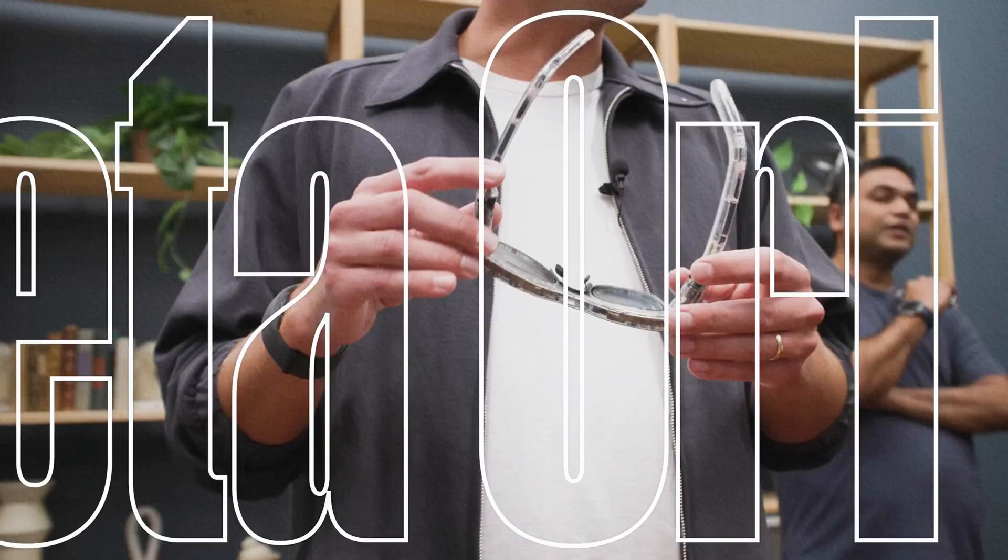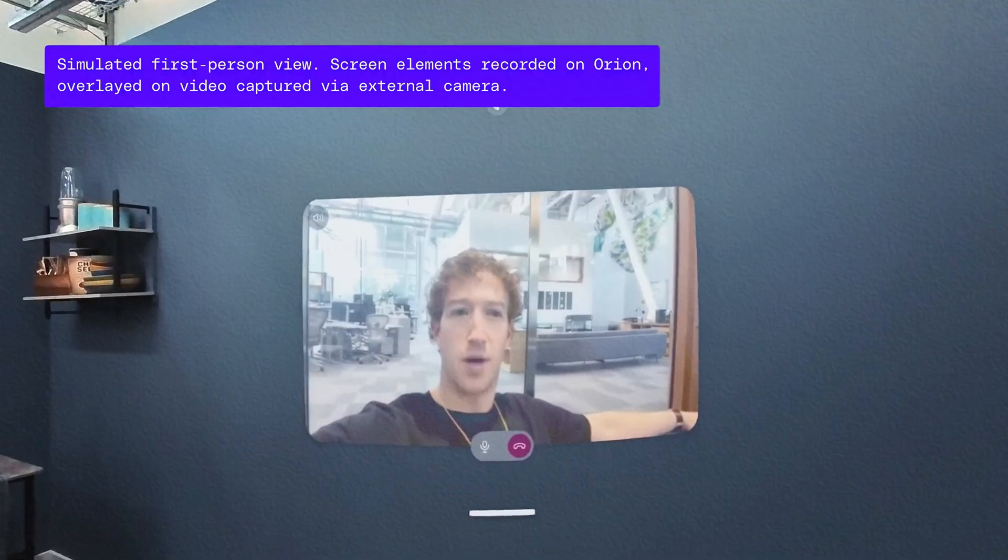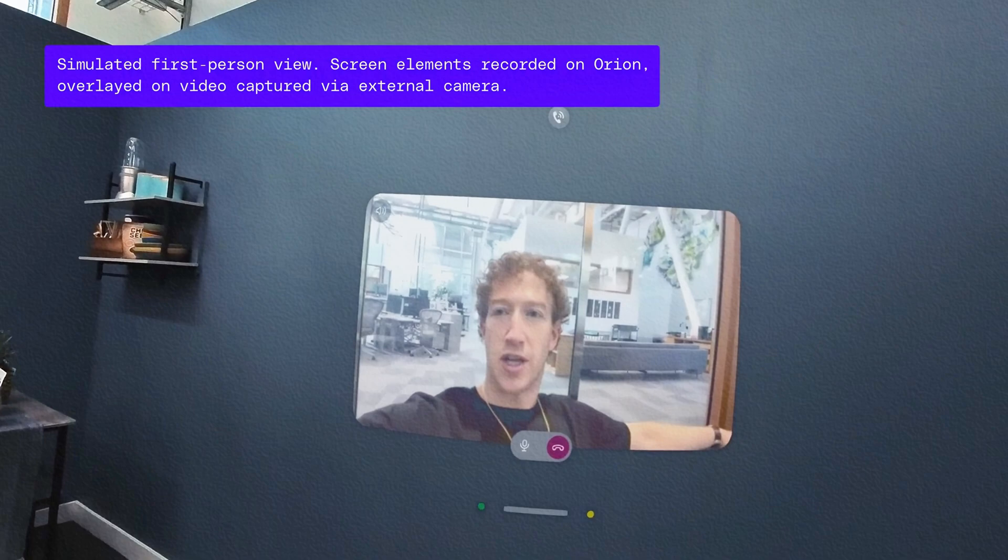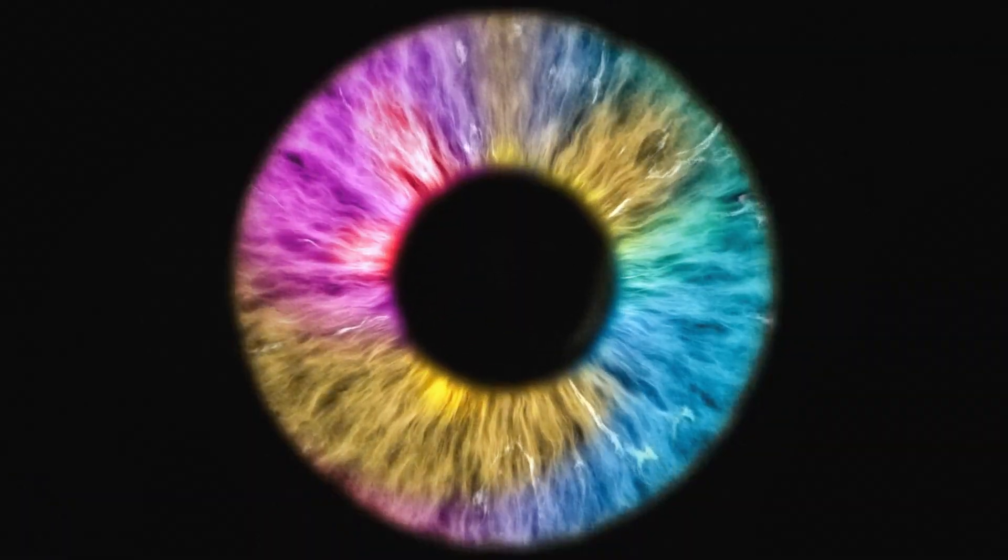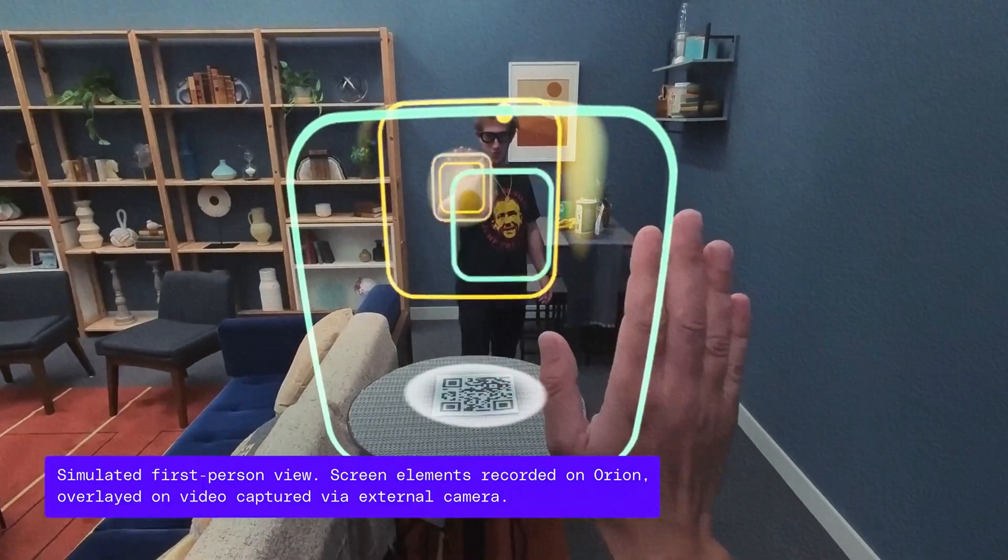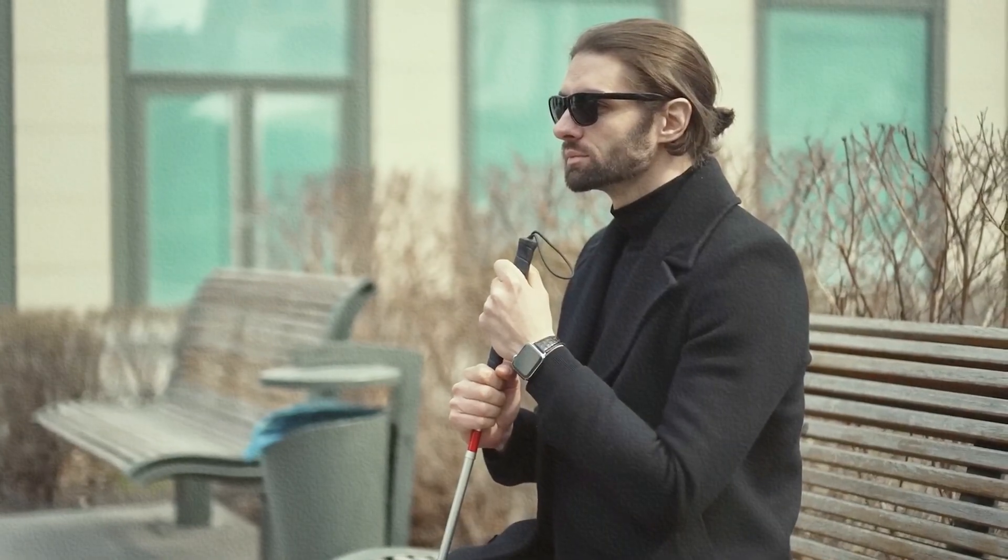The real kicker? Meta just dropped their Orion AR glasses, proudly calling them the future of computing. Meanwhile, Elon Musk is like, glasses? Cute. I'm rewriting your optic nerves. So yeah, Zuck's trying to augment reality. But Elon, he's trying to replace it, and that's just the beginning.